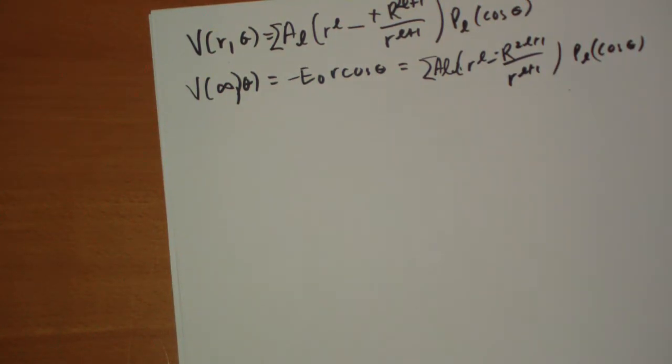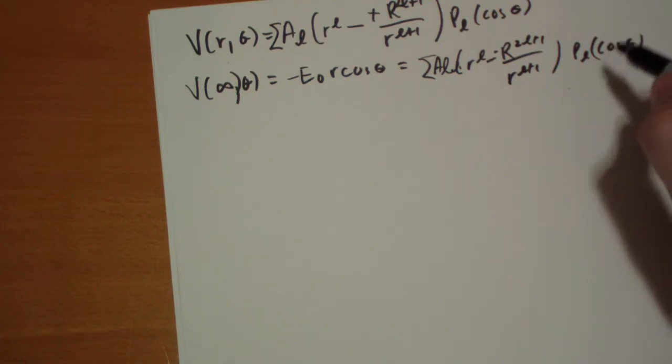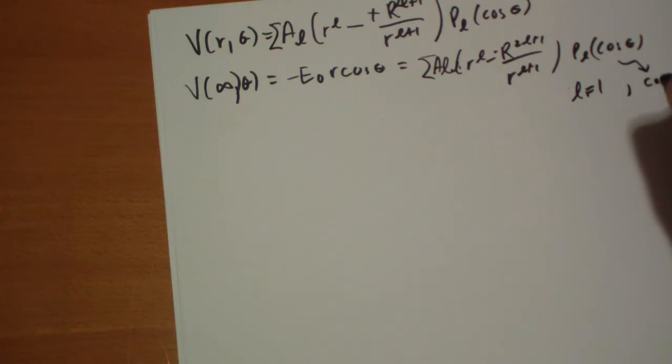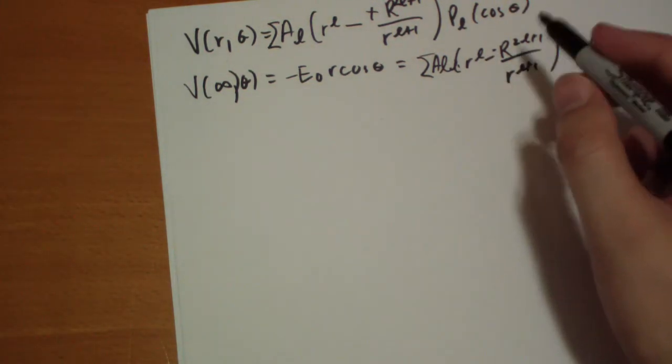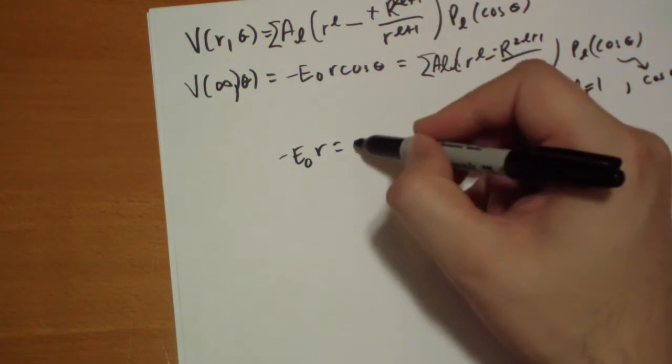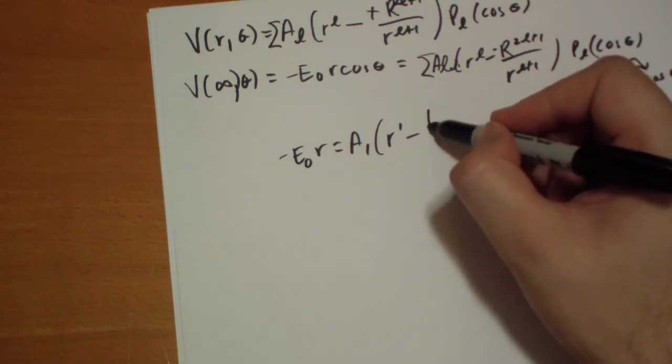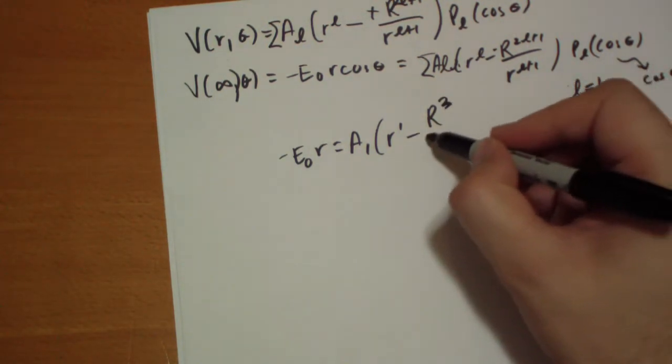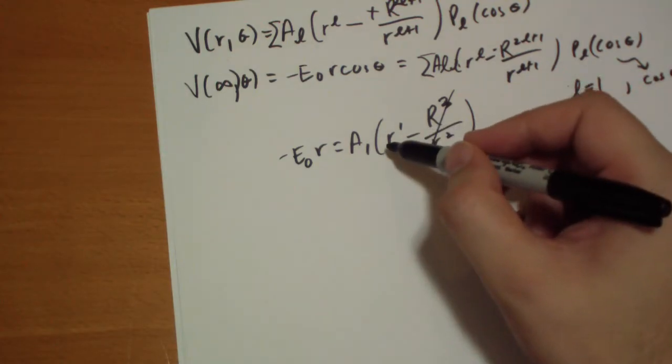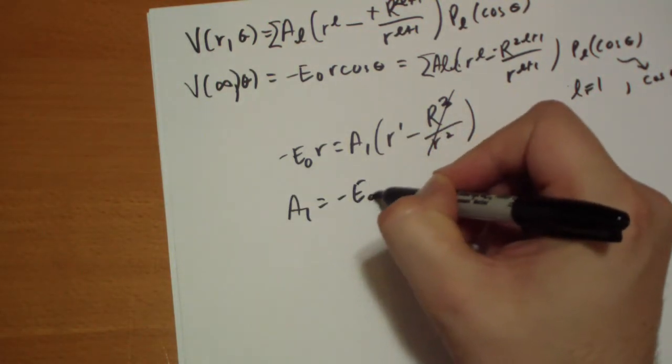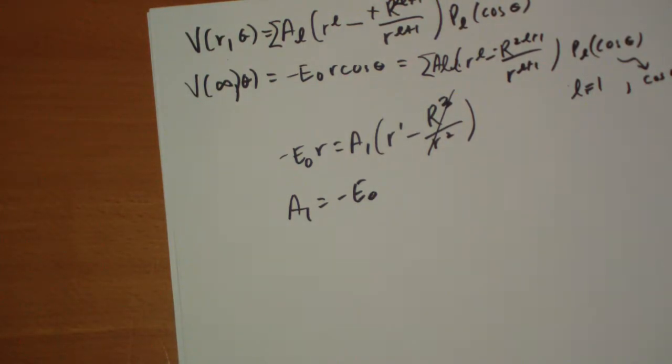We basically have our solution. The only time you're going to get cos theta for this term is for L equals one. This is equal to cos theta, right? So now we just read it off. A sub one, everything else is zero. So only L equals one survives. We get negative E-naught R is equal to A sub one times R minus R cubed over R squared. We're going where R increases to infinity, so this term actually becomes zero. A1 is equal to negative E-naught, and all other A's are zero.